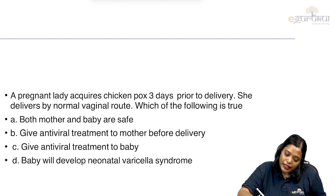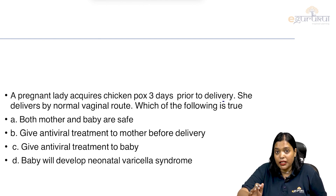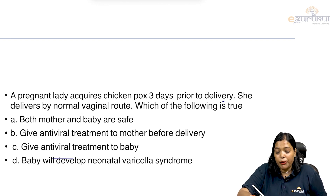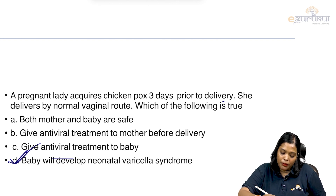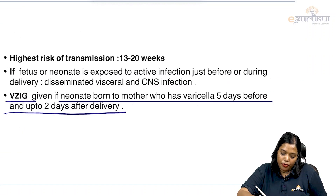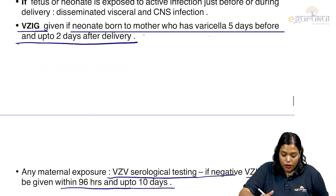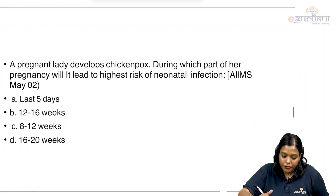Practice question: A pregnant lady acquires chickenpox 3 days prior to delivery and delivers by normal vaginal delivery. The correct answer is that the baby should receive immunoglobulins, as the baby has the risk of developing neonatal varicella syndrome. Antiviral treatment is not the answer — it is antibodies that matter. So varicella zoster immunoglobulin must be given.